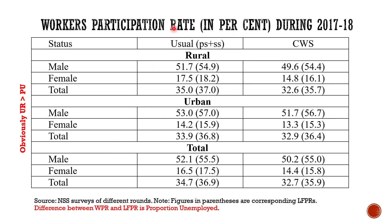The worker participation rate tells you what proportion of the population is actually employed. For males and females in rural areas there is a big difference, and this difference continues in urban areas as well. The figures in parenthesis show the labor force participation rate, and the difference between the worker participation rate and the LFPR is actually the proportion unemployed.